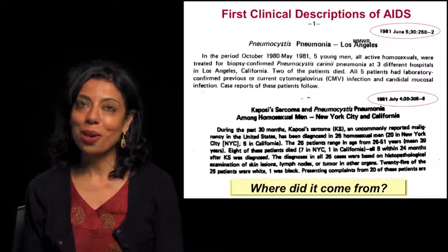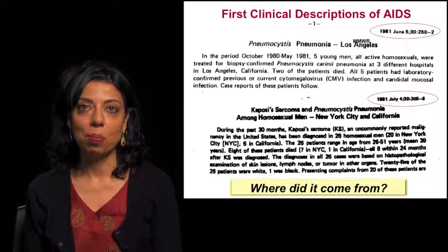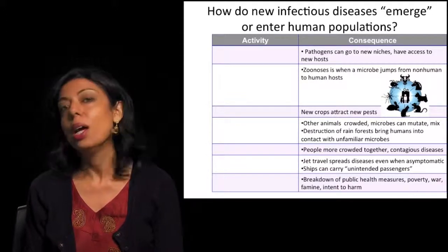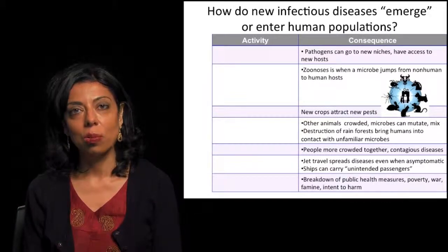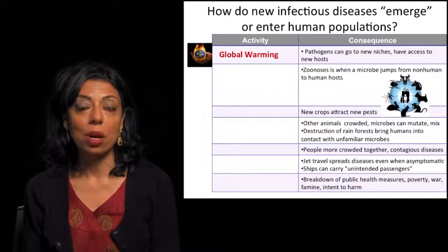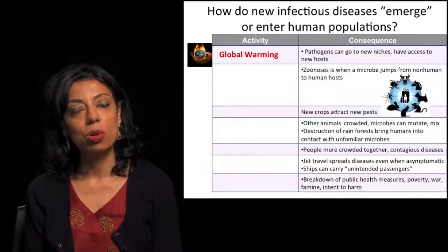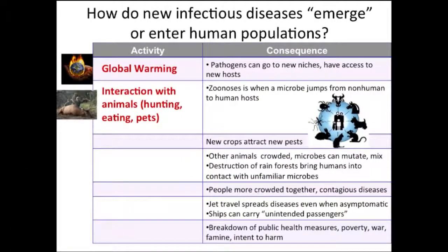That makes us take a step back and ask how any new pathogen enters human populations. As humans have increasingly encroached on the natural world, there are a variety of mechanisms. Global warming is one, where pathogens move to new niches and gain access to new hosts. Zoonoses is a major way in which pathogens from animals enter human populations through hunting, eating, and keeping animals as pets — and that is the mechanism by which HIV entered human populations.